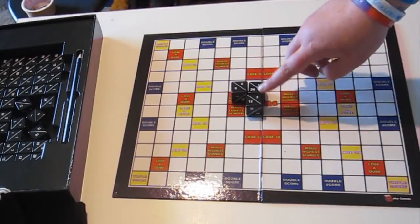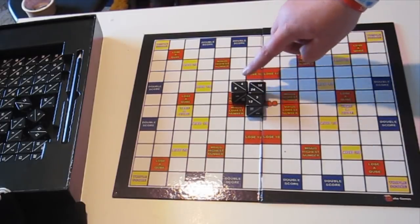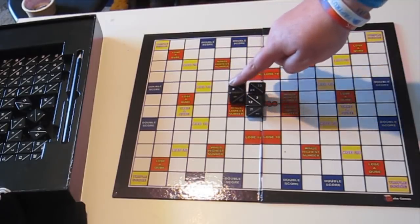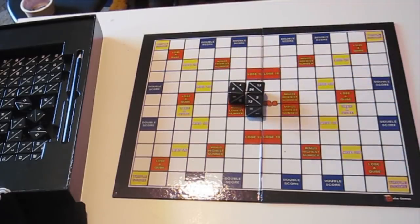And here would be 4 plus 24, but because I'm on the minus highest number I lose my 24, so I would only gain 4 points.